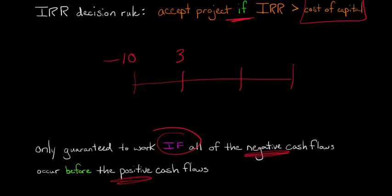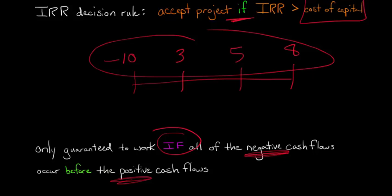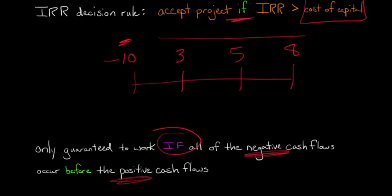And then positive 3, positive 5, positive 8, where these are all cash flows. So you have in a situation like that, you've got the negative cash flow coming first, and then all the positive cash flows. When that happens, then you can trust IRR always.